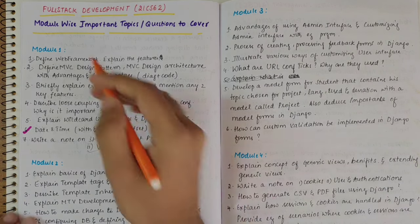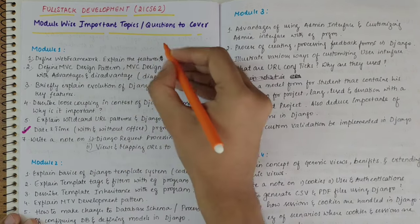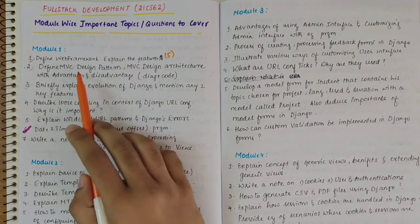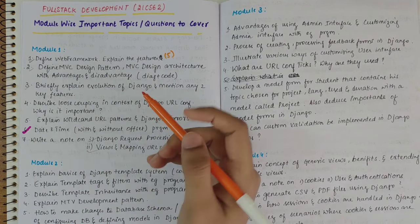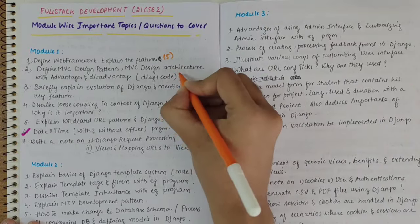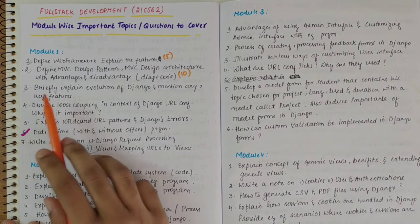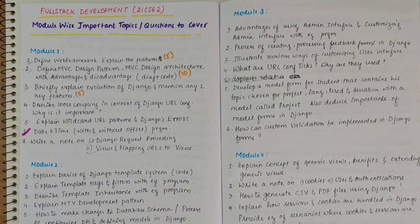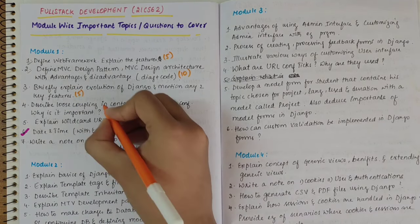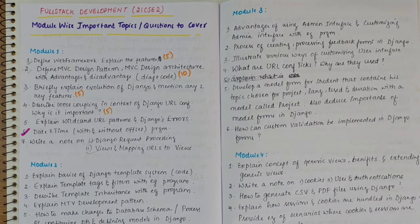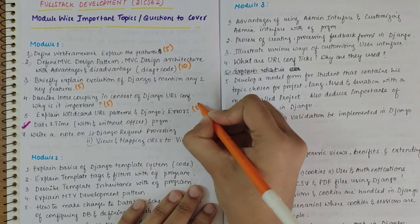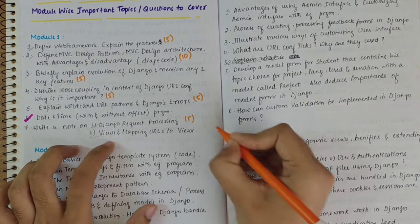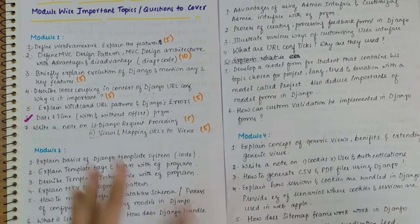Followed by this, we have the first question that is define the web framework and explain the features. This could be a five mark question. Then along with that, we have define MVC design pattern, MVC design architecture with advantages and disadvantages. This could be 10 mark question. Then we have evolution of Django and mention any two key features. This is again a five mark question. Describe loose coupling in context of Django URL configuration, why it's important, five mark question. Then we have wildcard pattern and Django errors, five marks. Then here we have note on Django request processing five marks, and views and mapping URLs to views again five marks.